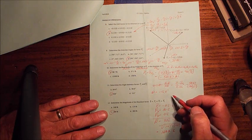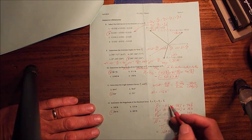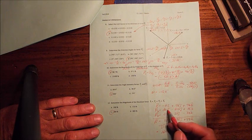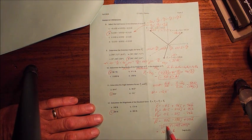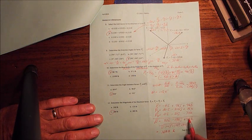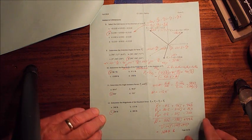Number 12, the magnitude of the resultant force of f1, f2, and f3. Just add them all up, write them in Cartesian format, add the columns. Take the square root of the sum of the squares of these components, and you get 168.8 pounds.